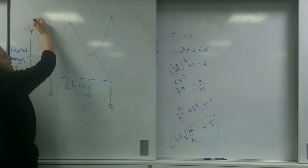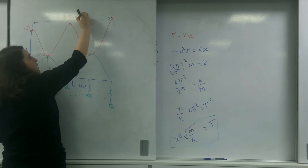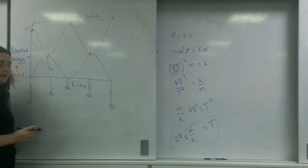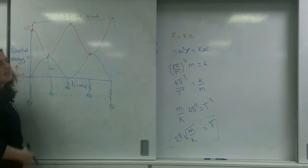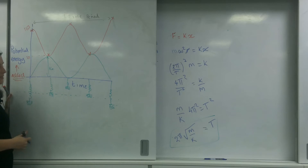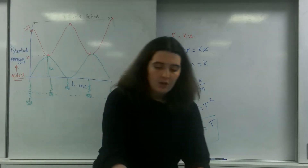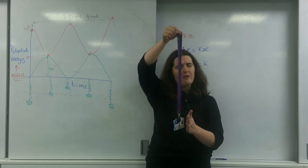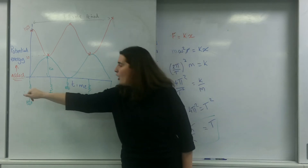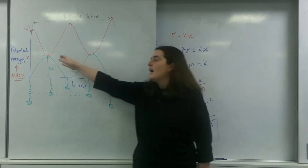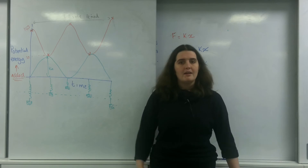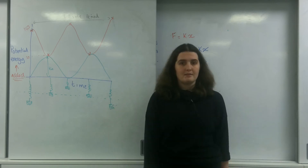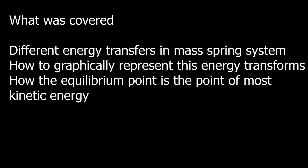It's important to note also that even though it looks like two waves, this is actually one time period — one cycle through. So this is all about the idea of elastic potential, GPE, and kinetic energy. Much like a pendulum where the equilibrium point is the fastest point, it's exactly the same here. Around the equilibrium point I have the most kinetic energy. And that is energy in a mass-spring system. Thank you.